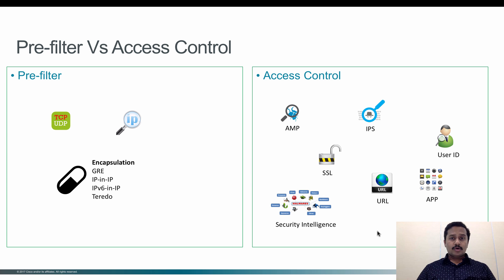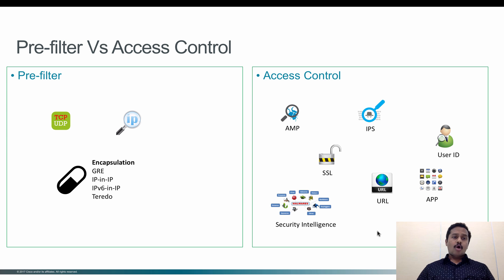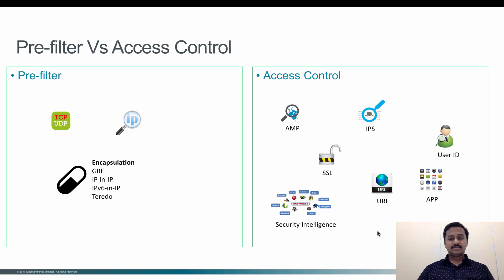These encapsulation packets - if you see traffic that matches any of these protocols - you have options: you want to simply drop the packet at the prefilter level, or you want to allow them at the prefilter level, or strip off the encapsulation packet and then send the inner payload to the access control policy for further inspection.